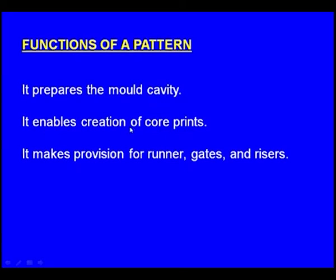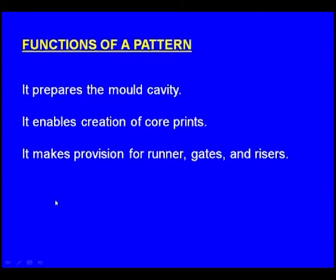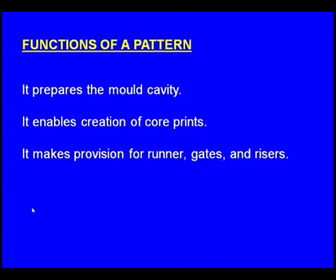These are the functions of a pattern: it prepares the mould cavity, it enables creation of the core prints. While making the pattern, these core prints are made as part of the pattern. Next, it makes provisions for runner, gates and risers. The molten metal is poured through the sprue, passes through the vertical passage known as the sprue, then through the horizontal passage known as the runner. After filling the mould cavity, it rises through the riser. The pattern should make provision for the runner, ingates and the riser.